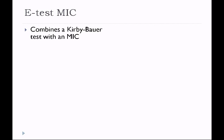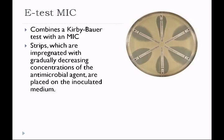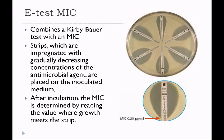The E-test combines the MIC and Kirby-Bauer approaches. It uses strips impregnated with gradually decreasing concentrations of an antimicrobial agent. The plate is inoculated with a 0.5 McFarland lawn and the strips are placed in a spoke-like pattern on the petri dish. After incubation, the MIC is read at the point where growth meets the strip — for example, at 0.25 mg/mL. Though it is an excellent test, the strips are extremely expensive compared to a microtiter assay, so it is not commonly used in clinical labs.